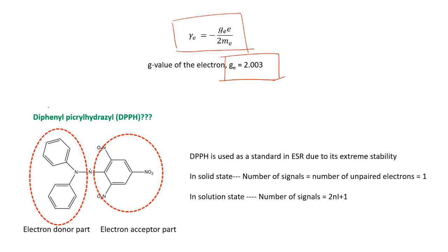Now we have to find out the number of ESR signals in the solid state of diphenyl picryl hydrazyl or DPPH. This is the structure of DPPH, and it is usually used as a standard in ESR due to its extreme stability. In solid state, number of signals equals the number of unpaired electrons. As you can see in this nitrogen, there is one unpaired electron, and number of signals will be equal to 1.